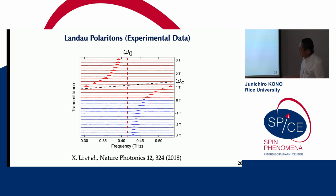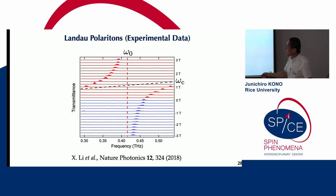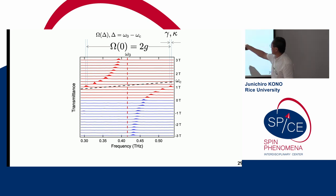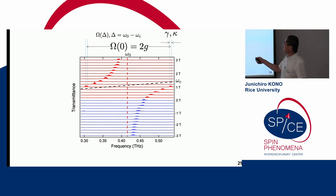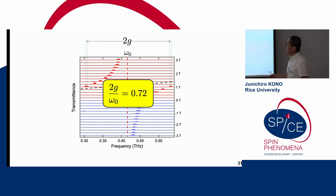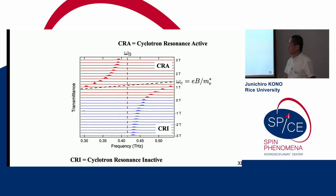This shows a series of transmittance spectra at different magnetic fields from minus 3 Tesla to plus 3 Tesla. The sign of the magnetic field is important. This is the upper polariton, this is the lower polariton, and zero detuning occurs here. The difference is the vacuum on-resonance vacuum Rabi splitting, or 2G, much larger than gamma and kappa. The cooperativity is 3,513. The splitting is 72% of the original bare frequency, which means we are in the ultra-strong coupling regime.